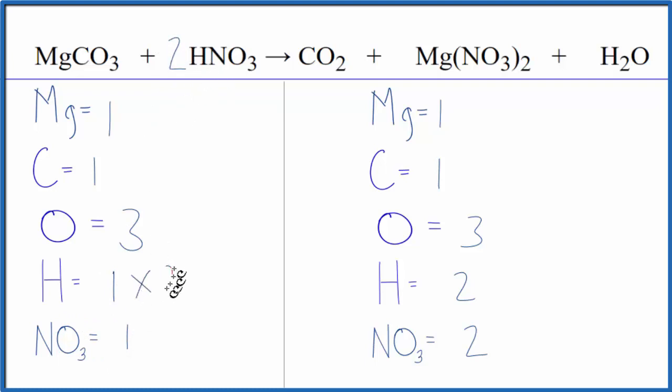One times two, that'll give us two. We have the nitrate ion, one of those times the two. That'll give us two, and we're done. This equation is balanced.